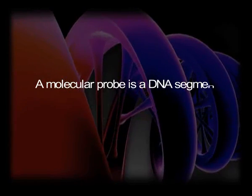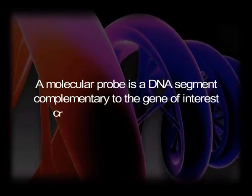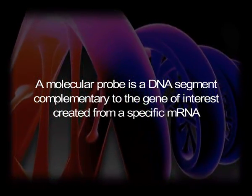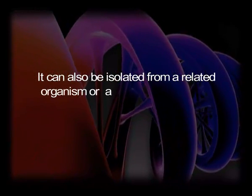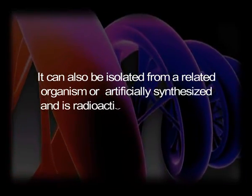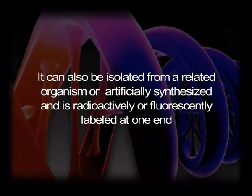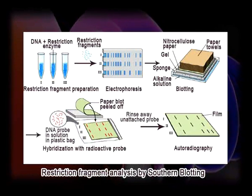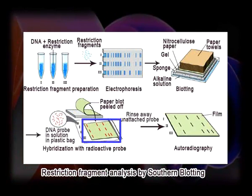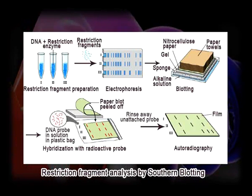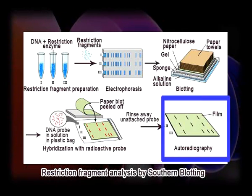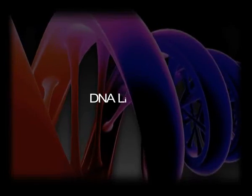A molecular probe is a DNA segment complementary to the gene of interest, created from a specific mRNA or isolated from a related organism or artificially synthesized, and is radioactively or fluorescently labeled at one end. After southern blotting, the labeled probe is used to hybridize with a specific DNA fragment. The location of the DNA fragment that hybridizes with the probe can be detected by autoradiography. The identified spot is then matched with the original gel and the gene of interest is thus isolated for cloning. The isolation of gene of interest is the most critical step in recombinant DNA technology.